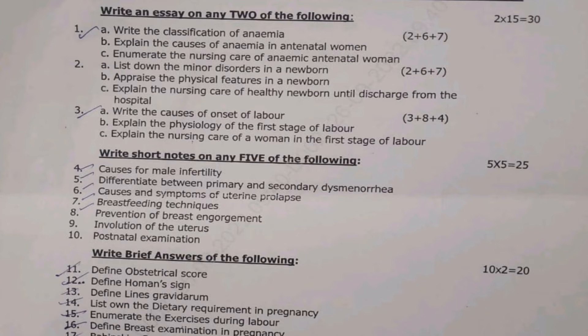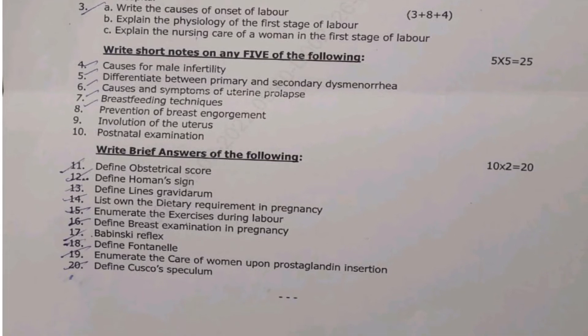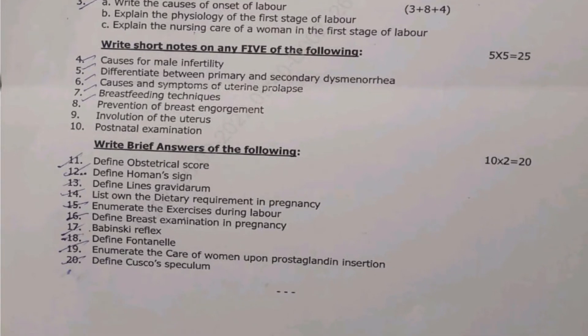Brief answers section: 11th — define obstetrical score; 12th — define Homans' sign; 13th — define linea nigra; 14th — list the dietary requirements in pregnancy; 15th — enumerate the exercises during labor; 16th — define breast examination in pregnancy; 17th — Babinski reflex; 18th — define fontanel; 19th — enumerate the care of women upon prostaglandin insertion; 20th — define Cusco's speculum. Each brief answer carries 2 marks, 10 × 2 = 20 marks. Total: 75 marks.